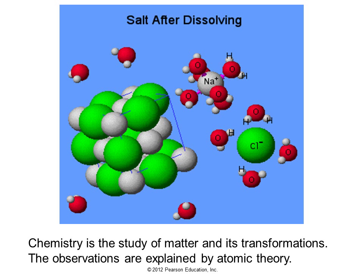In this chapter, chemistry is the study of matter and its transformations, and observations are explained by atomic theory. Here you see a model of sodium chloride: the sodium atoms and chloride ions together in a crystal. The water molecules are attracted — the oxygen to the sodium, carrying it away — and the positive side of the water molecules is attracted to the negative chlorine, carrying that atom away. What you see is our model for salt dissolving.